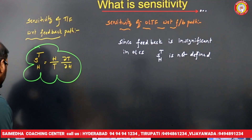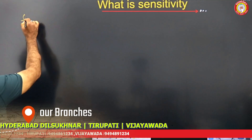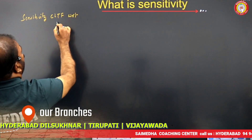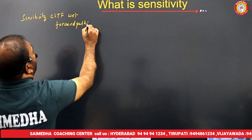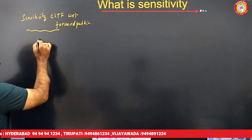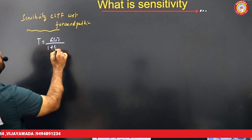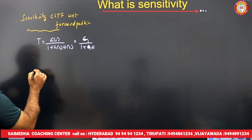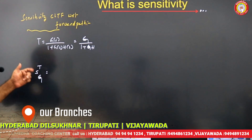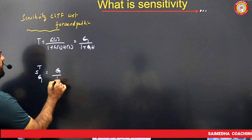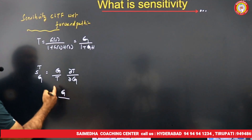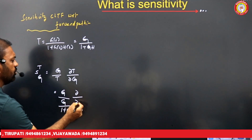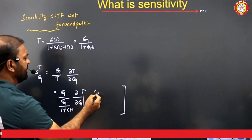I would like to find the sensitivity of the closed loop transfer function with respect to the forward path. We know the closed loop transfer function T = G(S) / (1 + G(S)·H(S)), which means T = G / (1 + GH). So S_T^G = (G/T) × (∂T/∂G). Substituting T = G/(1+GH): (G / (G/(1+GH))) × (∂/∂G)(G/(1+GH)).